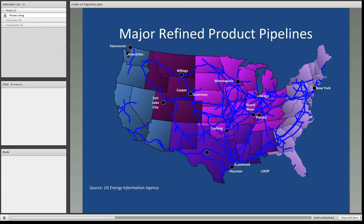Here is a schematic of the major refined product pipelines. When we talk about refined products, we're talking about those products refined from a crude oil barrel, such as gasoline, jet fuel, heating oil, diesel fuel, and liquefied petroleum gases.